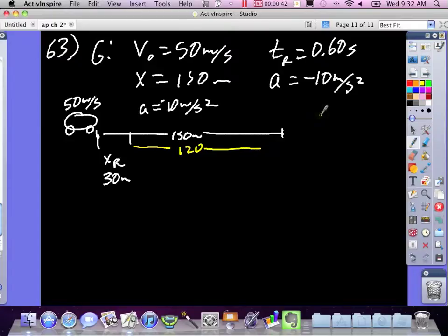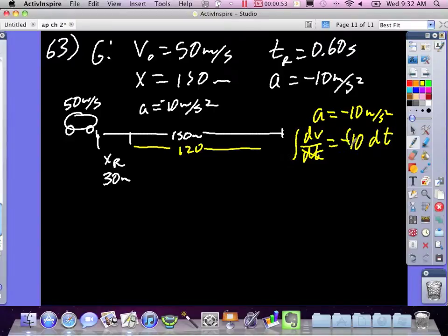We start off saying a is negative 10 meters per second squared. So this is negative 10, and then move this over here. Take the integral of both sides and you get v is negative 10t plus v₀.